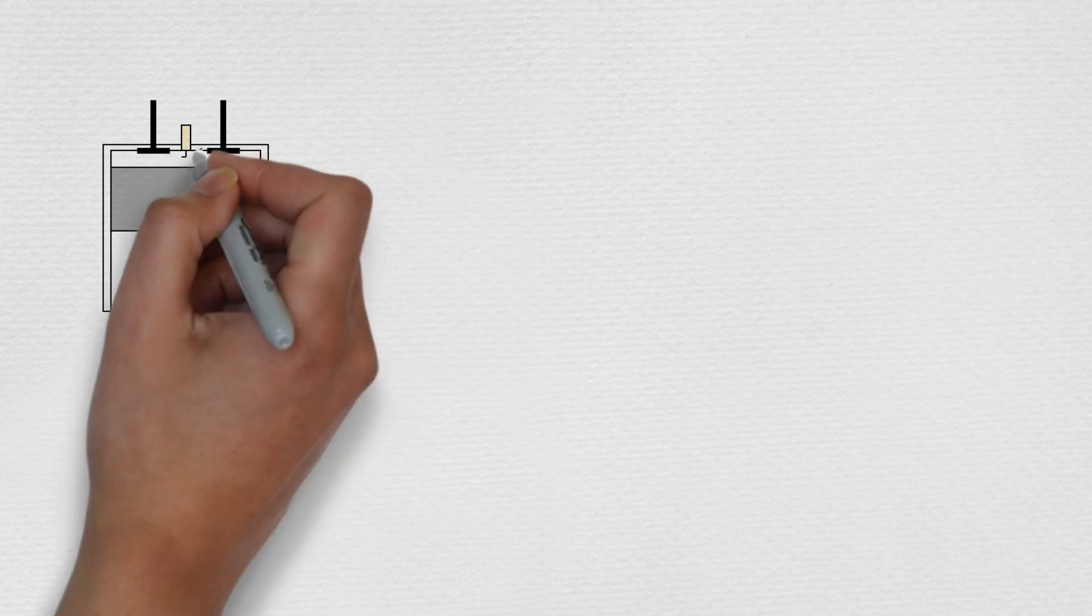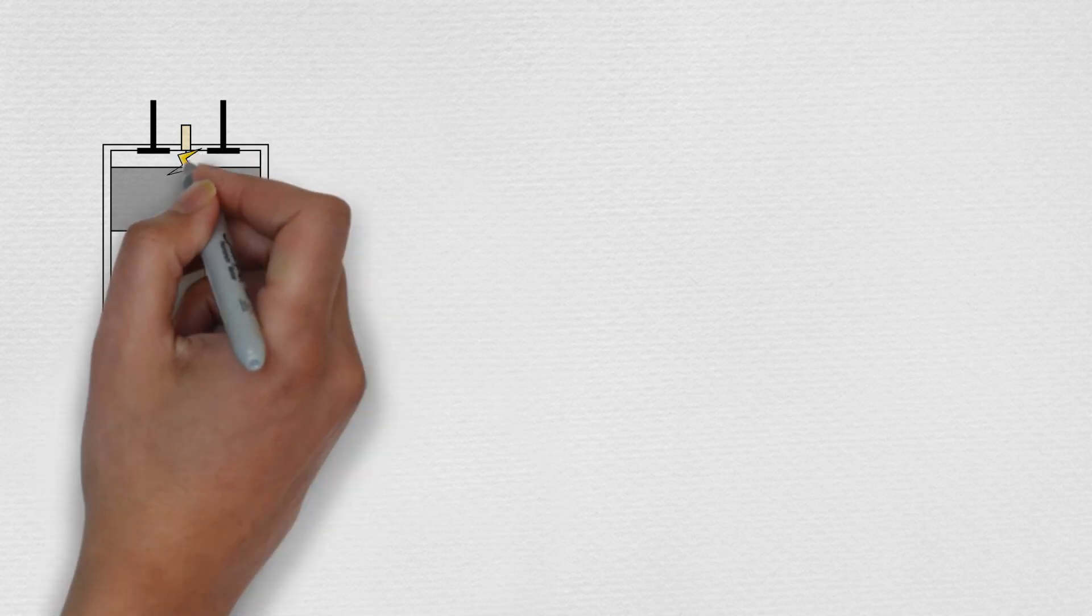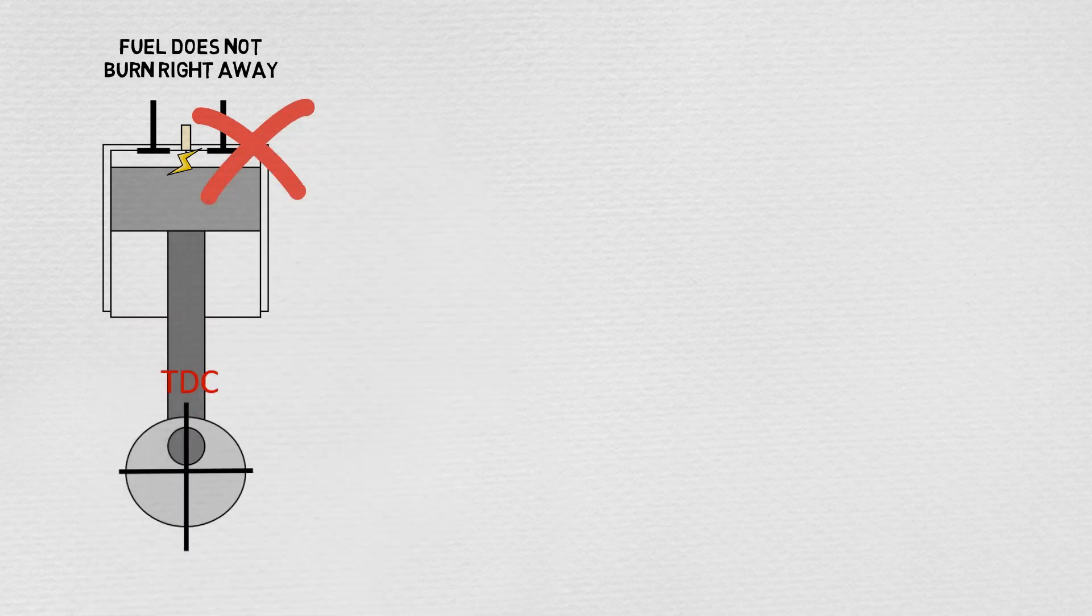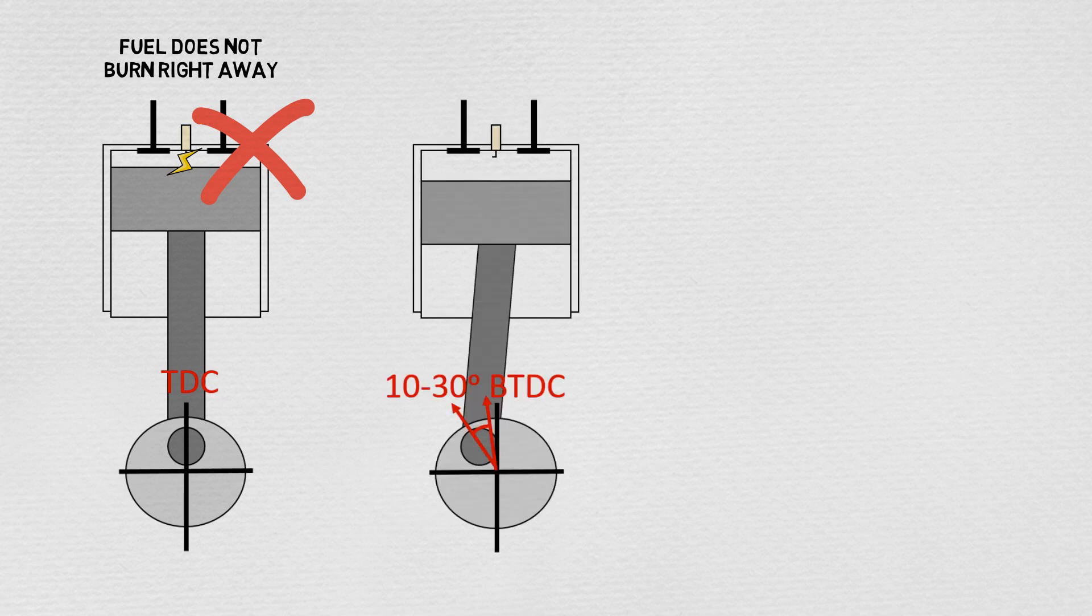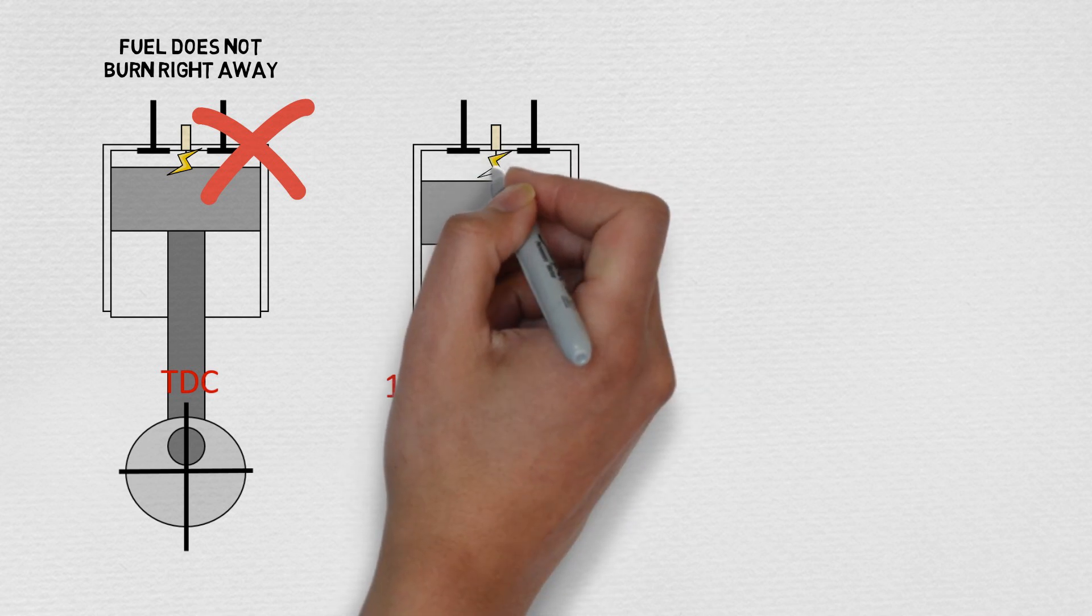Ignition timing refers to the moment relative to crankshaft angle when the mixture is ignited to start the combustion process. There is often a misconception that spark is triggered when the piston is at top dead center. But the truth is that fuel does not start burning the instant the spark is lit. Therefore, ignition timing must be advanced typically by about 10 to 30 degrees before top dead center.